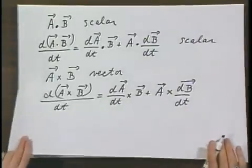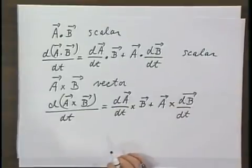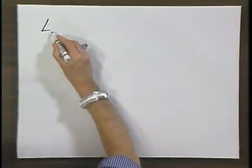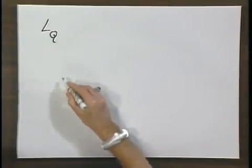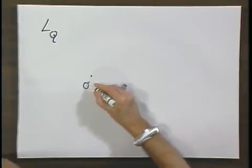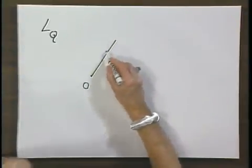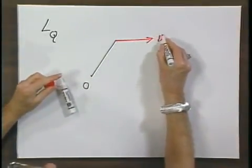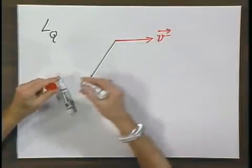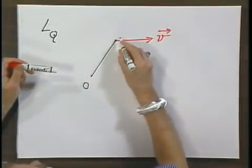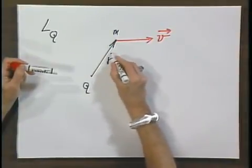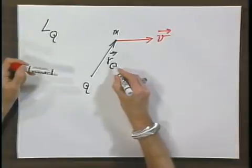I can give you an example of a cross product and take the time derivative. The angular momentum relative to point Q of a moving object. Here is point Q and here is an object with mass M that is moving with velocity V. This is the position vector R of Q.